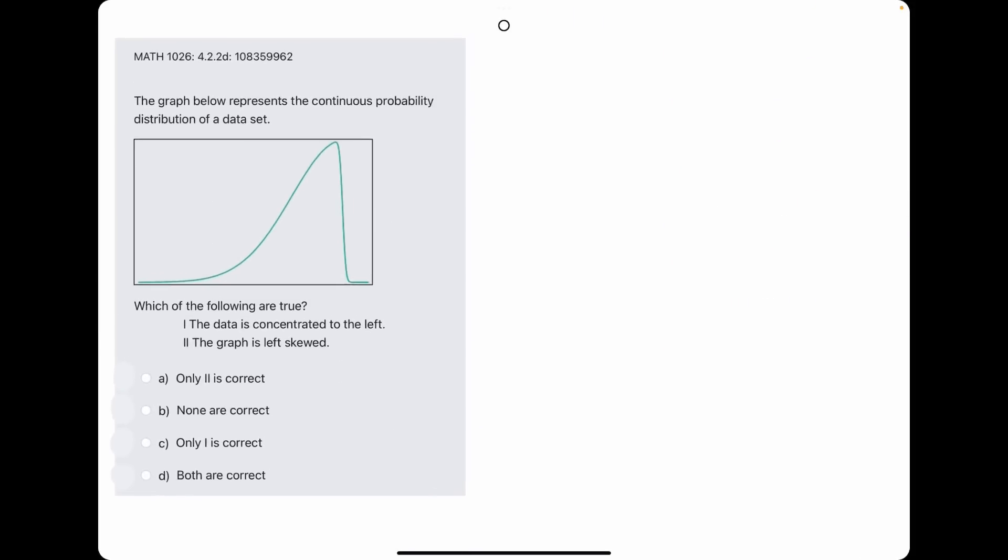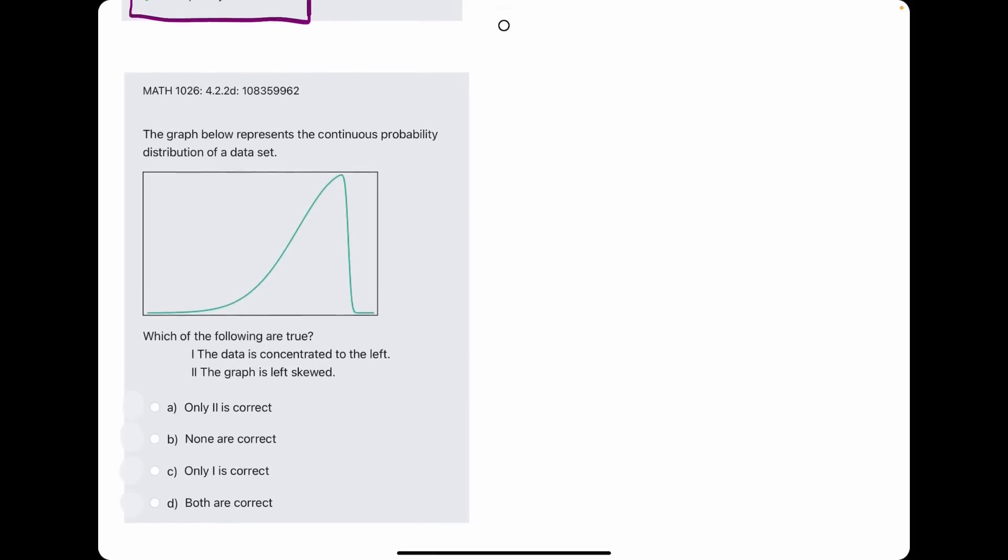Now, the last one. They say the data is concentrated to the left. Well, that would have been helpful in the last one. But this is false, because it's concentrated to the right. And then this says the graph is left skewed. That is correct. So always think, wherever the tail of the graph is, that tells you whether it's left or right skewed. So the tail is to the left, so it is left skewed. So only number two is correct.